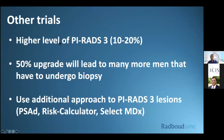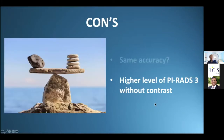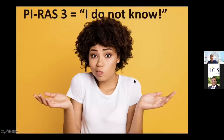Other trials have shown a higher level of PI-RADS-3 diagnoses — there is a 50% upgrade — leading to many more men who have to undergo biopsy. An additional approach such as PSA density, risk calculators, or SelectMDX is needed to reduce PI-RADS-3 numbers. PI-RADS-3 means 'I do not know.' Urologists do not want a report saying 'I do not know,' so we have to reduce PI-RADS-3 as much as possible.